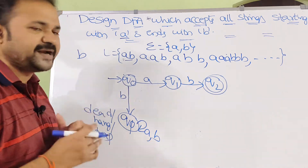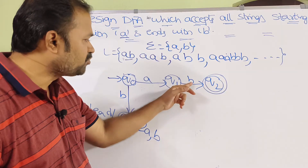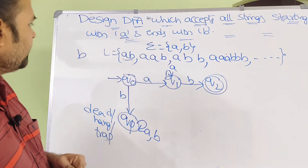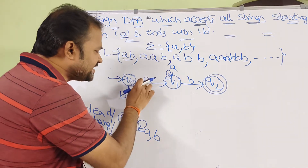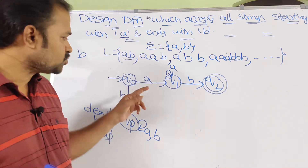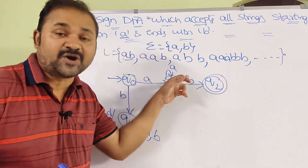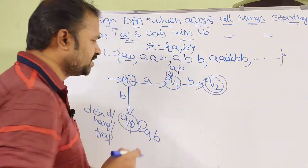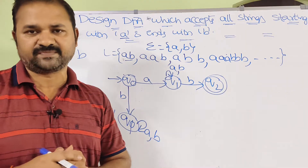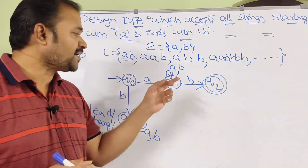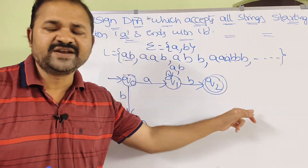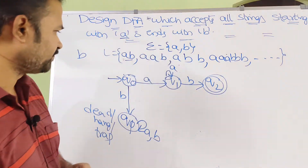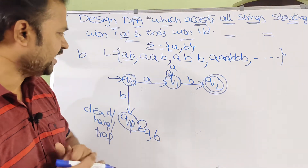On Q0, A goes to Q1 and B goes to Q_pi. On Q1, can we apply a self-loop with A? Yes, because in between A and B we can have any number of A's. But we can't apply B as a self-loop on Q1, because in a DFA applying an input symbol on a state gives only one next state, and B already transitions from Q1 to Q2. So we apply the self-loop on Q1 with A only.